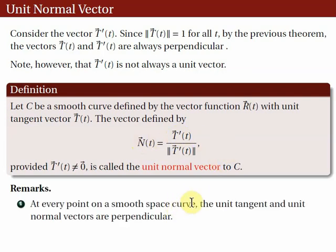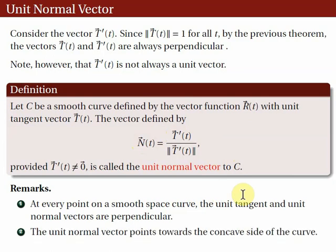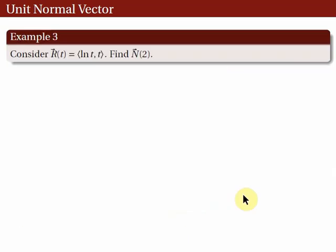At each point on a smooth space curve, the unit tangent T and unit normal vector N are always perpendicular. Also, the unit normal vector points towards the concave side of the curve. To illustrate, let's look at the next example.